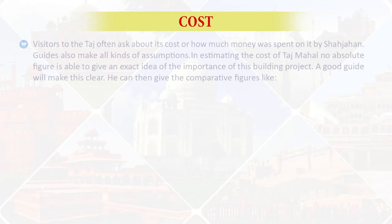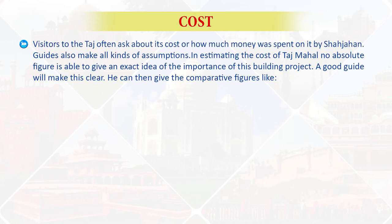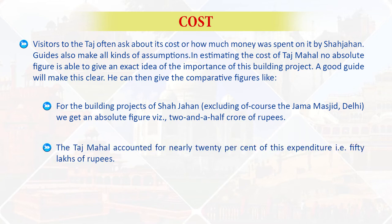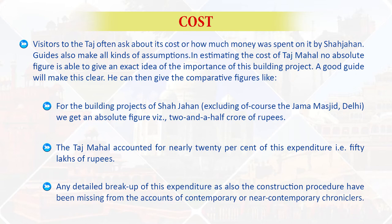If we look into the cost — visitors to the Taj often ask about how much money was spent on it by Shah Jahan, and guides make all kinds of assumptions. No absolute figure is able to give an exact idea of the importance of this building project. A good guide can give comparative figures: for the building projects of Shah Jahan, excluding the Jama Masjid Delhi, we get an absolute figure of 2.5 crores of rupees. The Taj Mahal accounted for nearly 20% of this expenditure, that is 50 lakhs of rupees. Any detailed breakup of this expenditure and construction procedures have been missing from the accounts of contemporary or near-contemporary chroniclers.